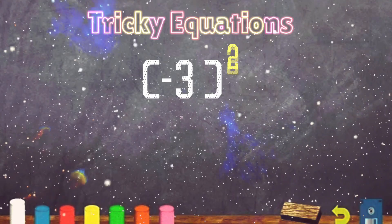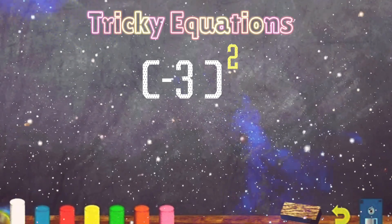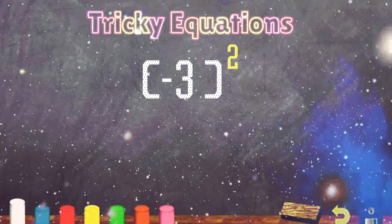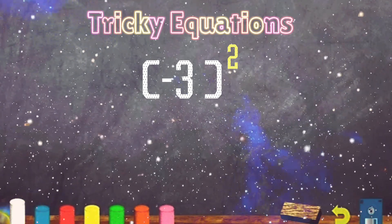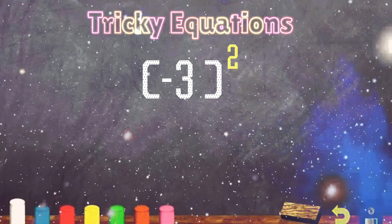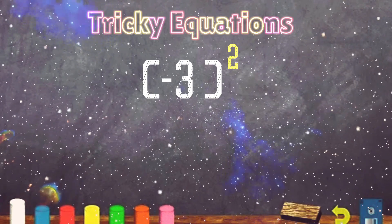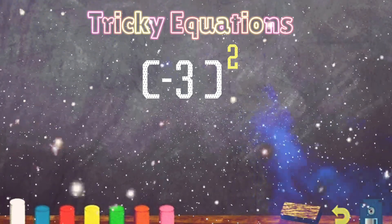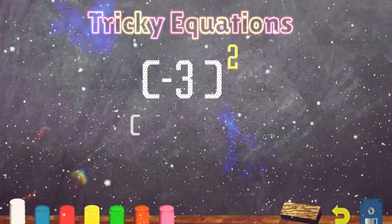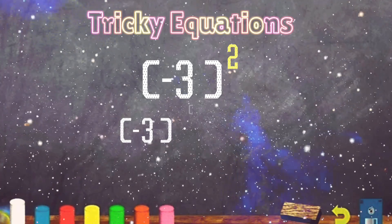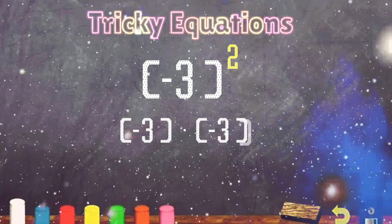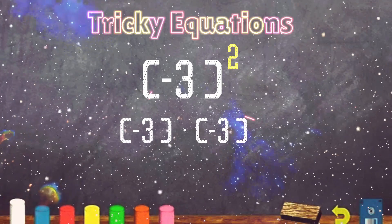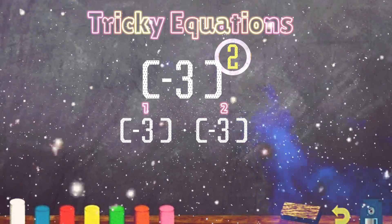Negative 3 in the parentheses and the exponent outside of the parentheses. Now we're going to take what's in the parentheses and we're going to multiply itself together twice. So let's do that. We got negative 3 in the parentheses times negative 3 in parentheses. We did it two times because the exponent is the number 2.